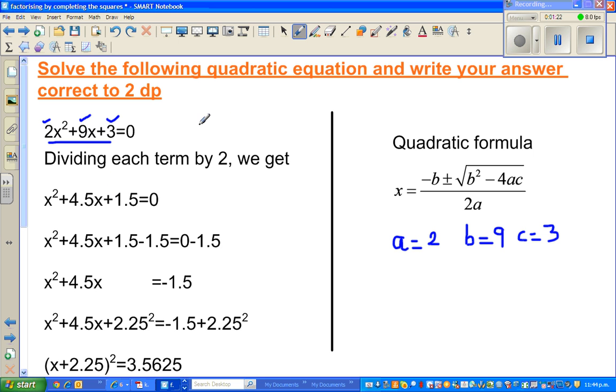Now I want to get rid of this +1.5, so I've taken away 1.5 from this side. I take away 1.5 from this side, so this and this gets cancelled.